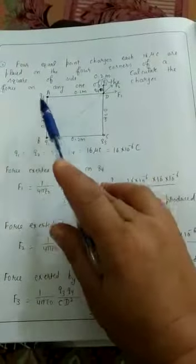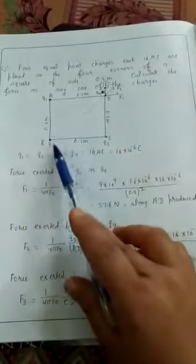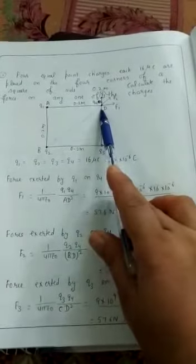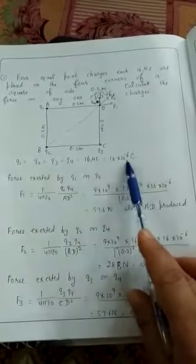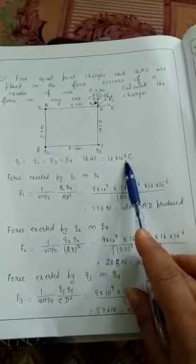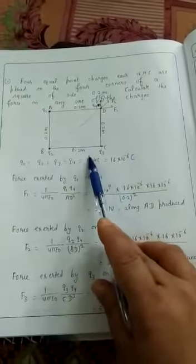At each corner we have charge: q1, q2, q3, q4. The value of each charge is 16 microcoulomb, which means 16 times 10 to the power minus 6 coulomb. The side of square is 0.2 meter.